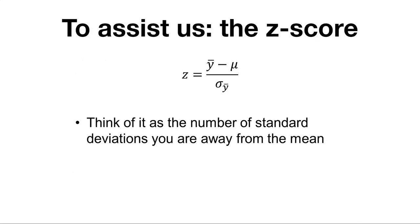To help us with this, we're going to calculate what we call the z-score. You can think about this as the number of standard deviations you are away from the mean is represented by z.